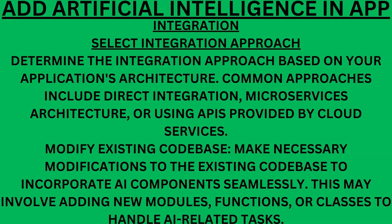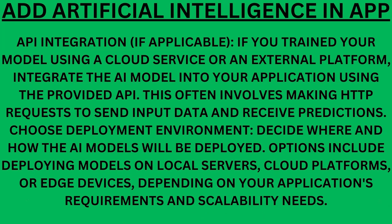Integration. Select integration approach. Determine the integration approach based on your application's architecture. Common approaches include direct integration, microservices architecture, or using APIs provided by cloud services. Modify existing code base. Make necessary modifications to the existing code base to incorporate AI components seamlessly. This may involve adding new modules, functions, or classes to handle AI-related tasks. API integration. If you trained your model using a cloud service or external platform, integrate the AI model into your application using the provided API — this often involves making HTTP requests to send input data and receive predictions.